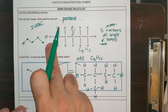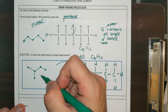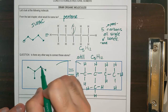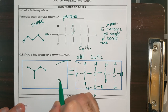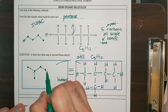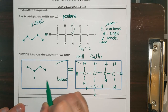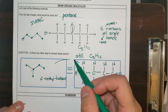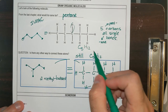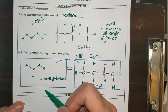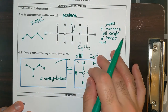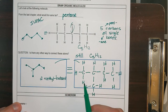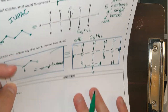Well, how can I tell the difference between a straight chain pentane and something else? How would I name this using IUPAC nomenclature? Well, now my longest chain is four, so that's butane, and on my second carbon I have a methyl group. This is 2-methylbutane. How do I know the difference between the two C5H12s? There's a special name — we call those isomers.